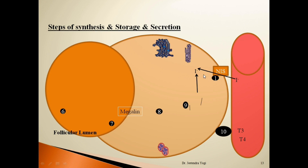Since this movement is against the electrochemical gradient, it requires energy from the ATP-dependent sodium-potassium pump. This entry can be inhibited by thiocyanates and perchlorate, which are called antithyroid substances and used in the treatment of hyperthyroidism. This iodide ion entry is stimulated by thyroid stimulating hormone from the pituitary gland, which can increase the thyroid iodide to plasma iodide ratio up to 100:1. This is the first step in thyroid hormone synthesis — iodine trapping.